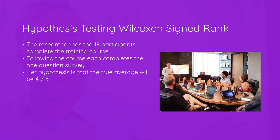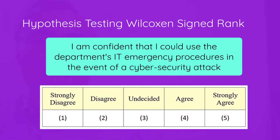In this case her hypothesis is that the true average will be 4 out of 5 on her Likert scale. She's going to ask: 'I am confident that I could use the department's IT emergency procedures in the event of a cybersecurity attack,' have participants rate this from 1 to 5, and her hypothesis is that the average response will be 4.